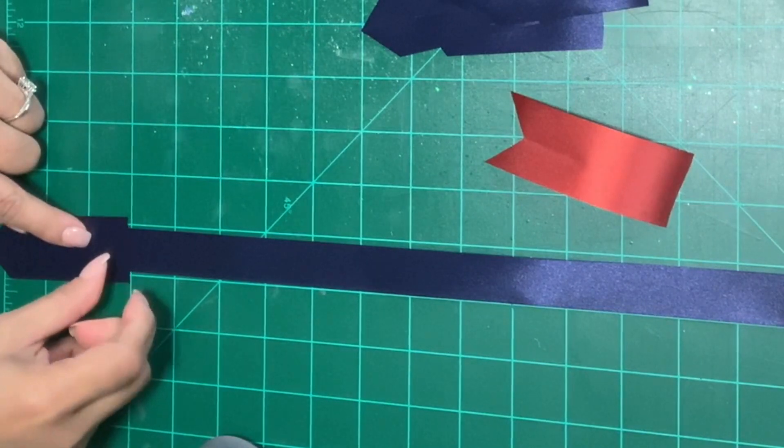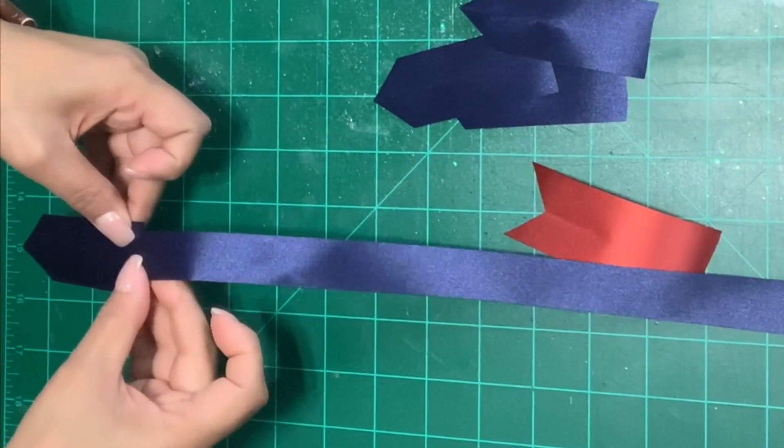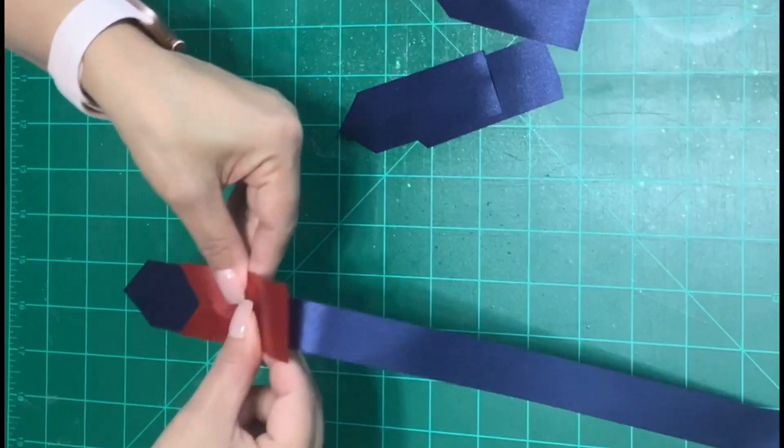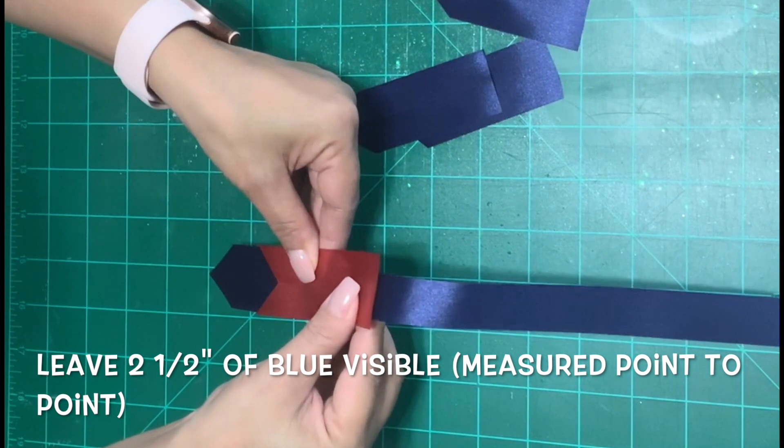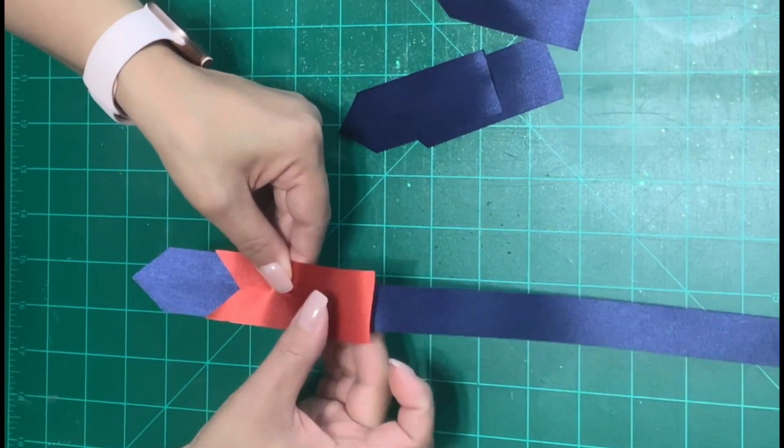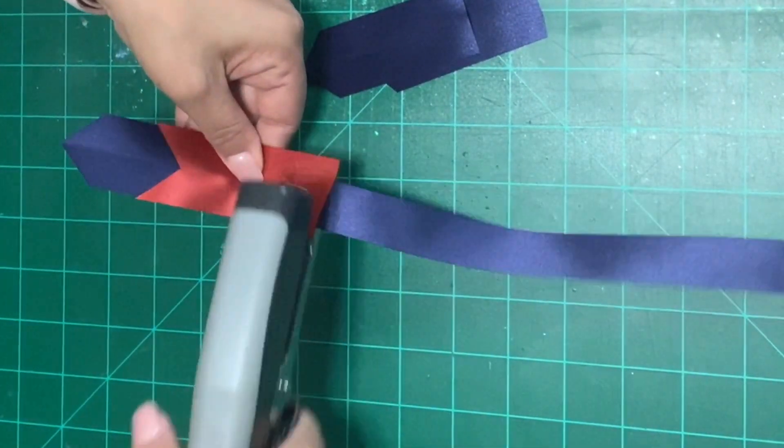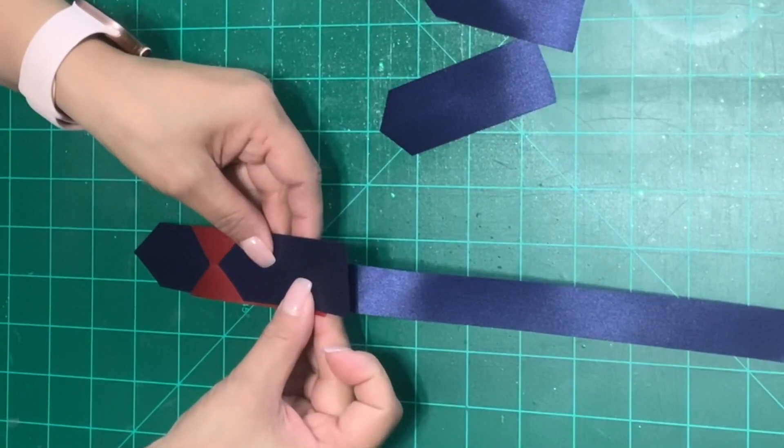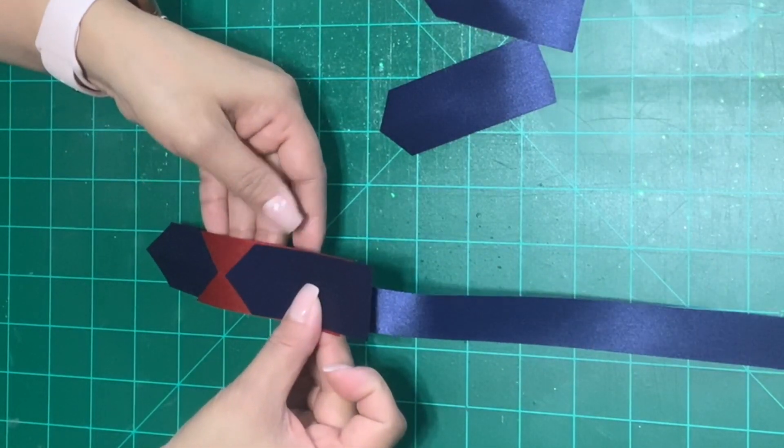Now we'll start stapling the ribbons to the base. We'll start with the blue one with the arrow going down. Now we'll place our orange one on top. You want to leave some room where the blue part is so that you can place any letters. I'm leaving about two inches. Make sure it's straight and then staple. Now we'll place a blue one lining it up with the other blue point and leaving less space in between.